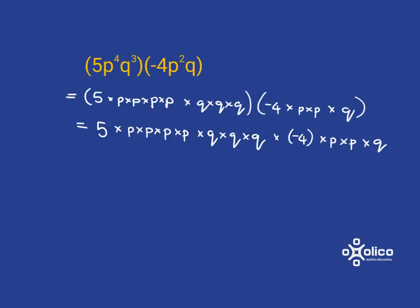Now what can I do to kind of sort that out and simplify it? Well, 5 and negative 4 are just ordinary numbers, and so I can multiply them together. 5 times negative 4 gives me negative 20.